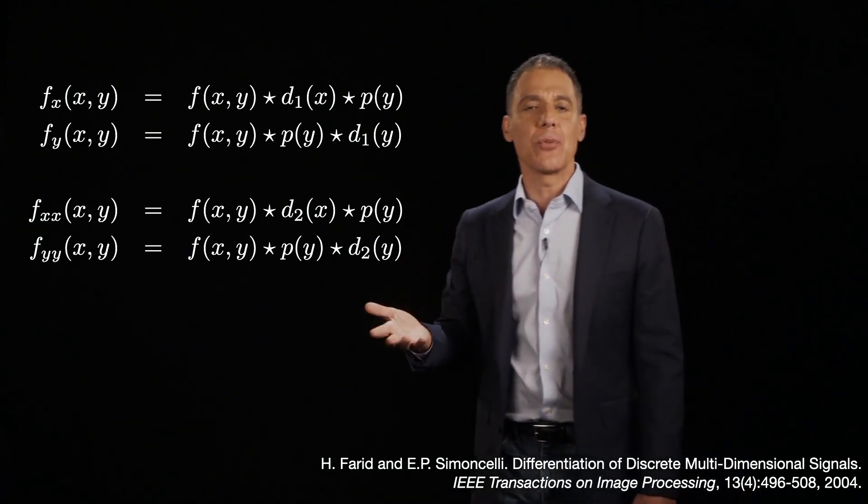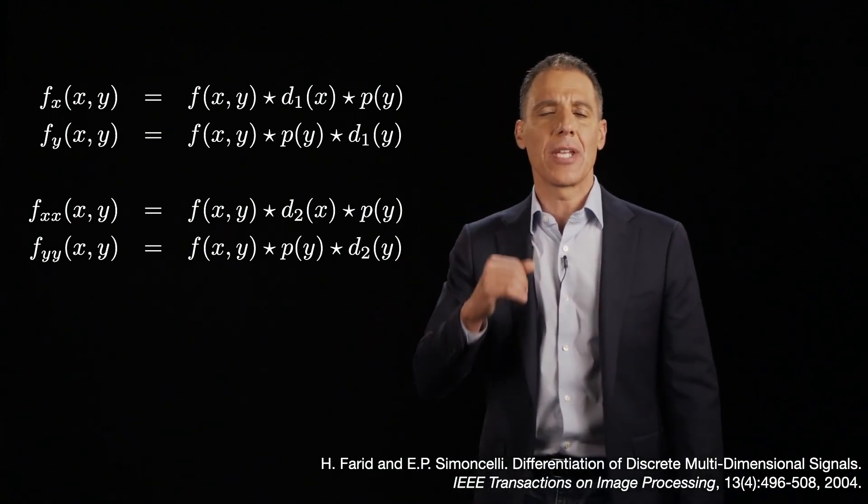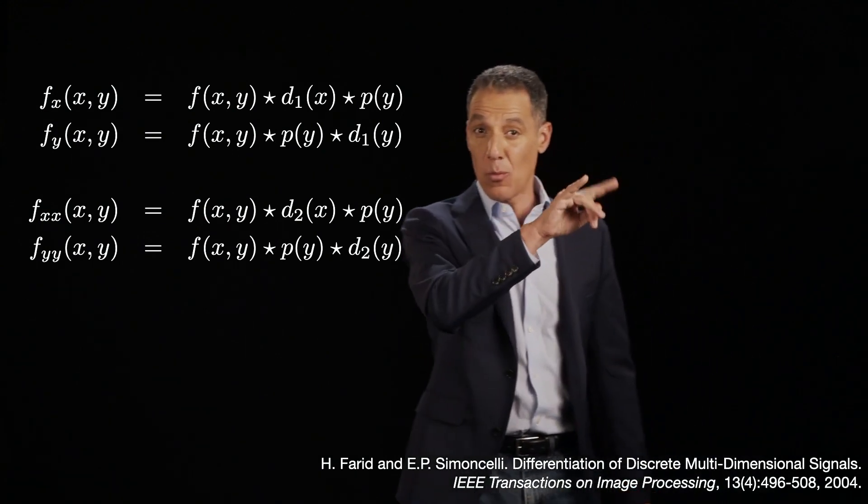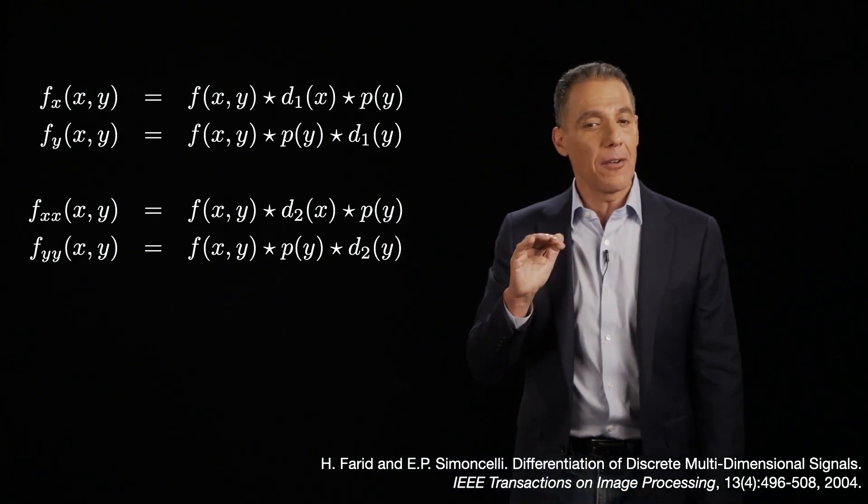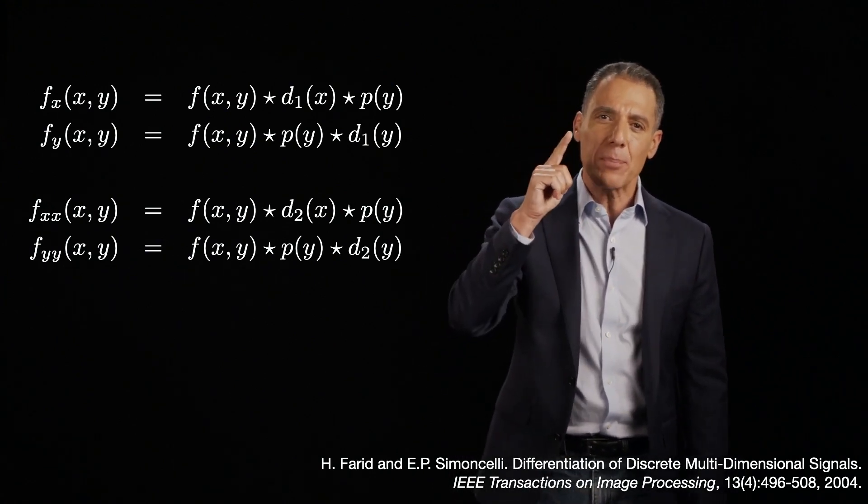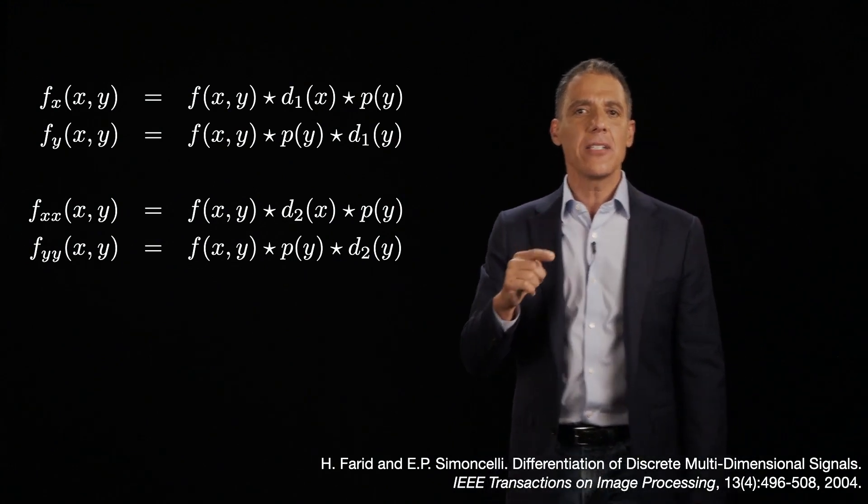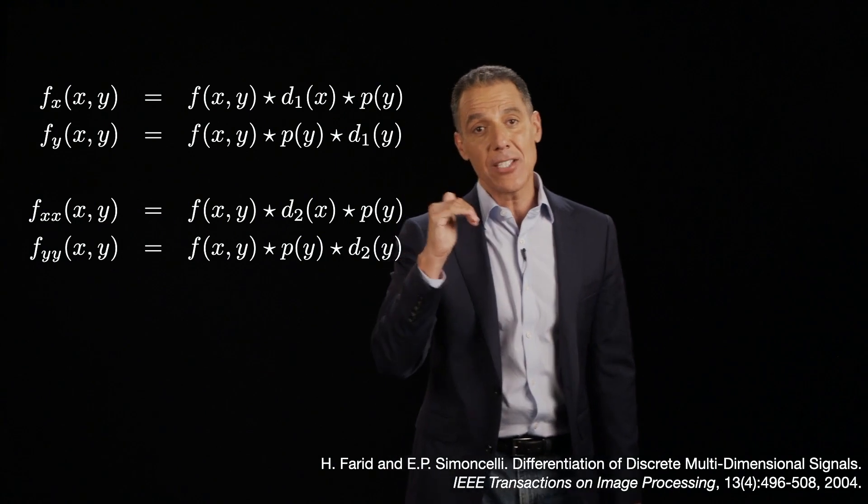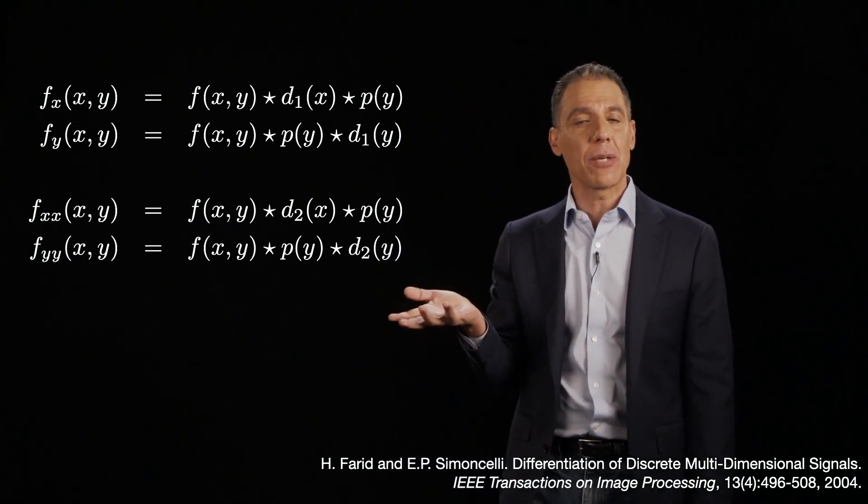So how do you compute these? So I hinted at this early on, that those derivatives, that one minus one, and in fact, that one minus two one, are not very good derivatives. They are, and why? Because we saw that approximation.